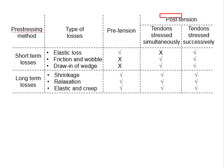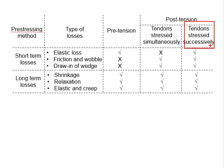Under the category of post-tensioning, all the tendons may be stressed simultaneously — that is, at the same time — or the tendons may be stressed successively, which is one by one. By definition, successive stressing means that after transfer of one tendon there will be stressing of the following tendon.